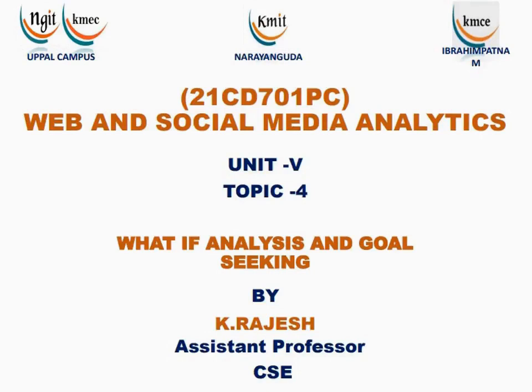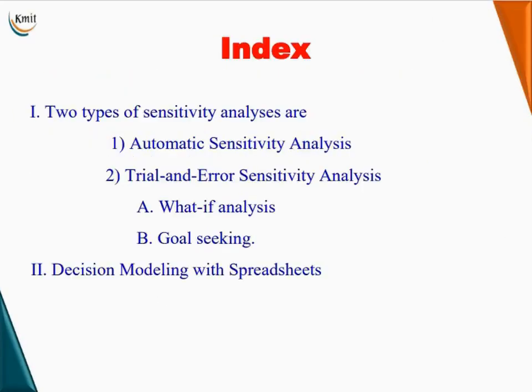Hello all. In this session we will discuss topic 4 of unit 5, which is what-if analysis and goal seeking. In the last session we discussed sensitivity analysis. There are two types of sensitivity analysis: automatic sensitivity analysis and trial and error sensitivity analysis. Trial and error sensitivity analysis has two types: what-if analysis and goal seeking. We will also be discussing decision modeling with spreadsheets.